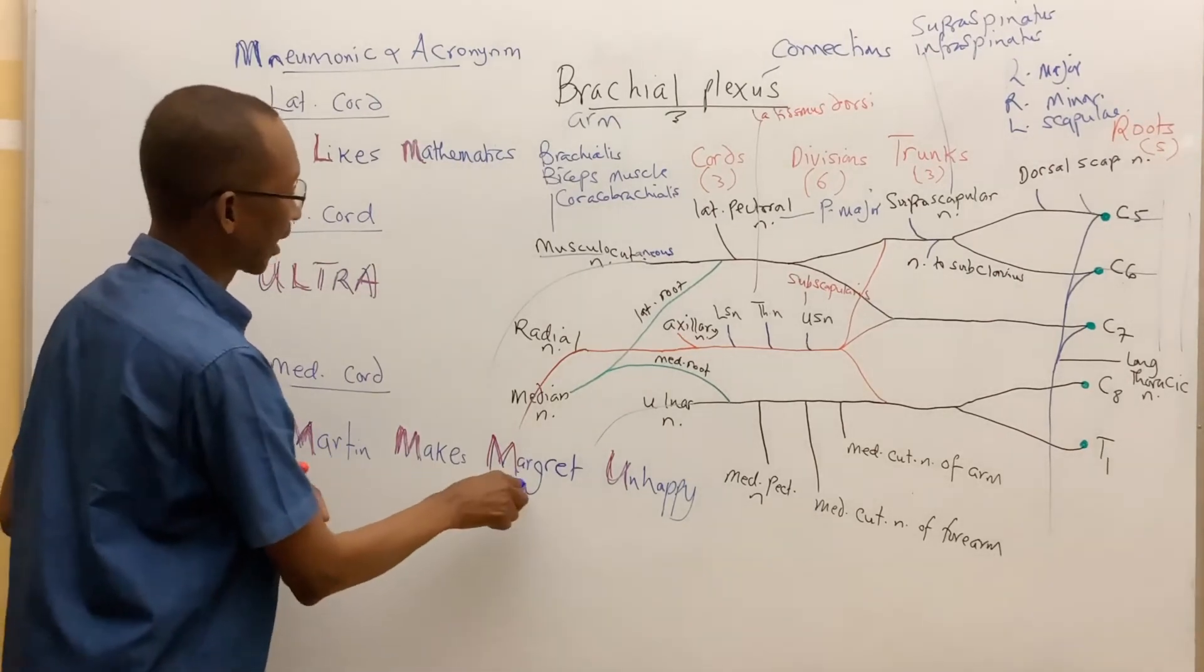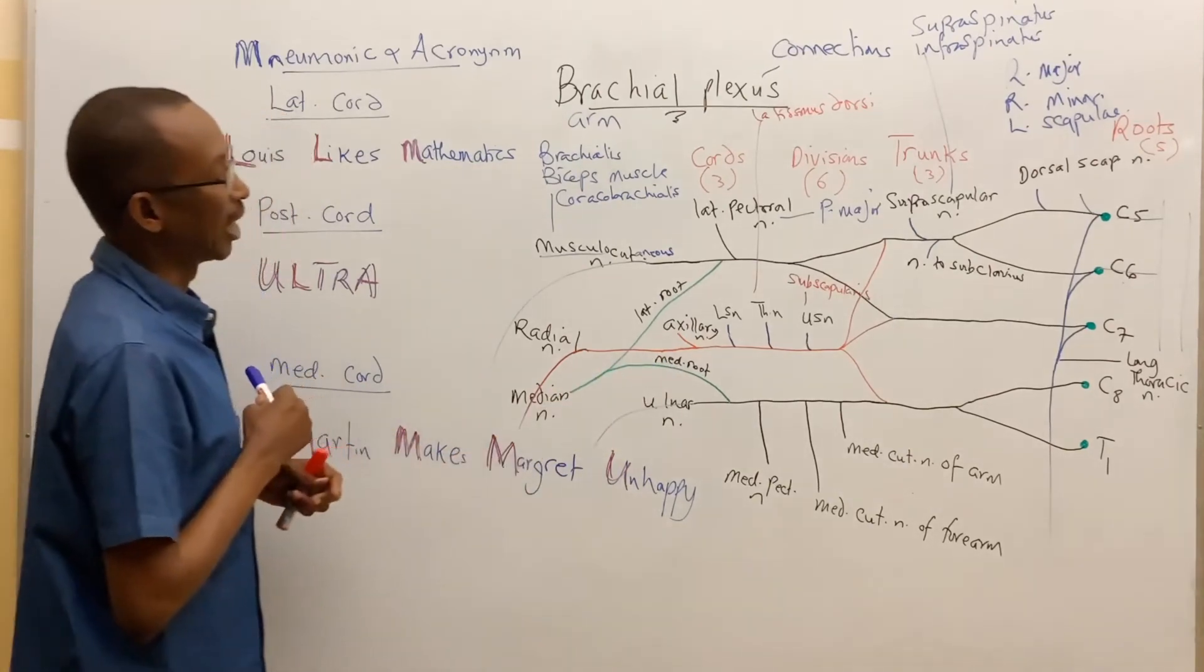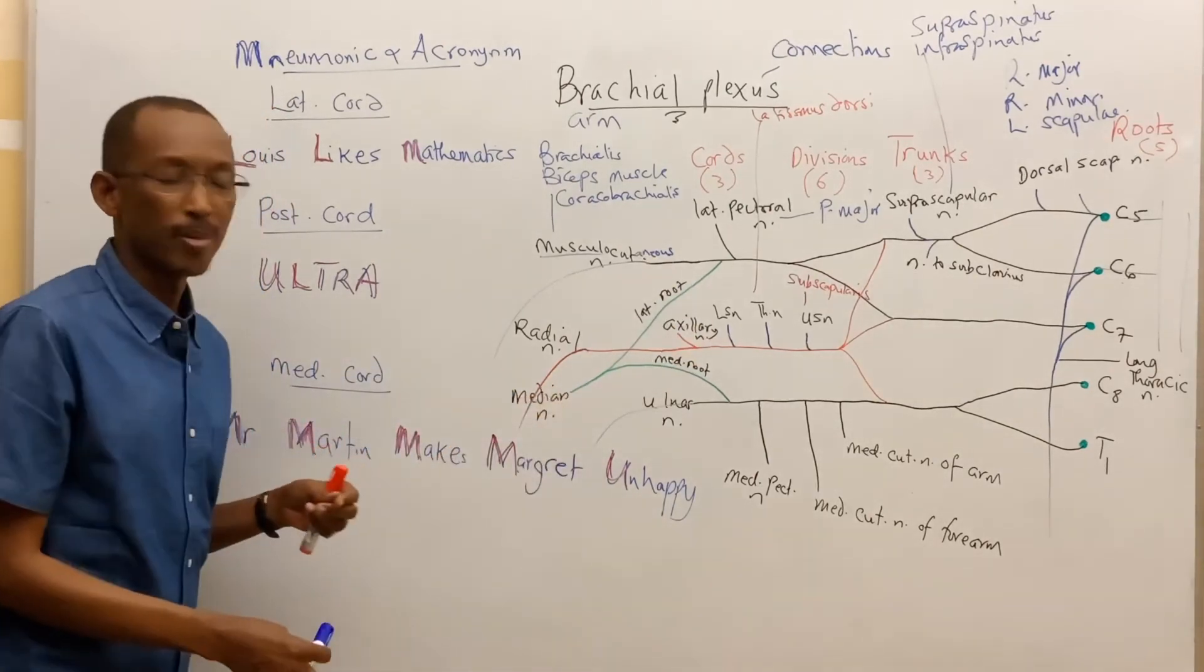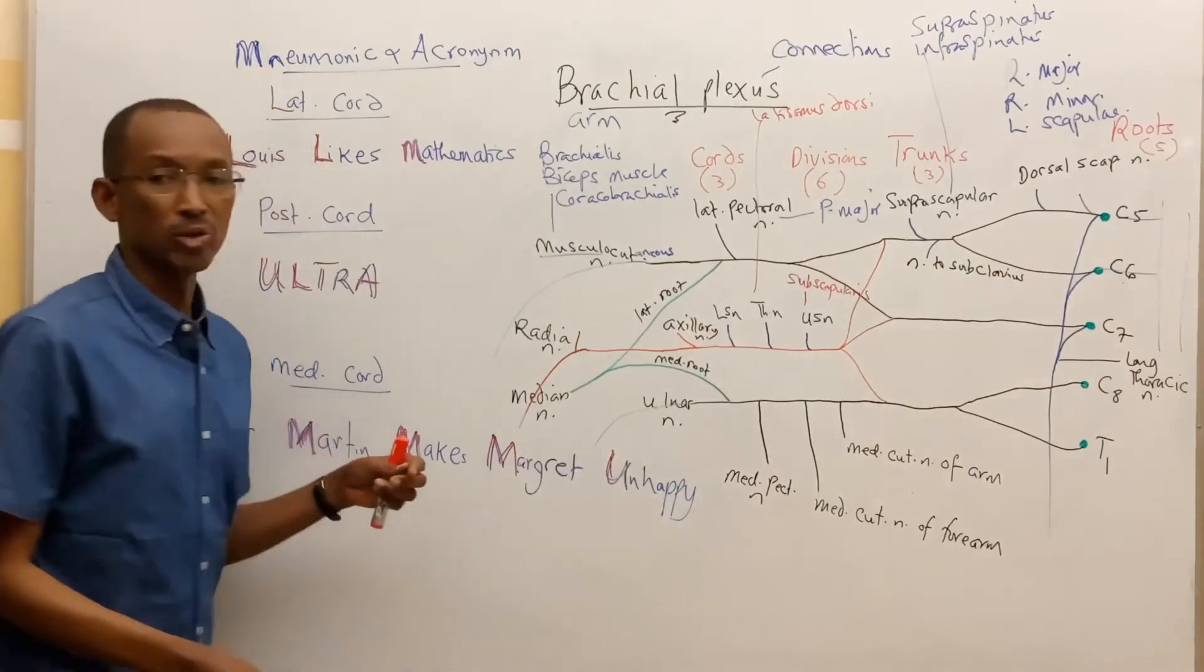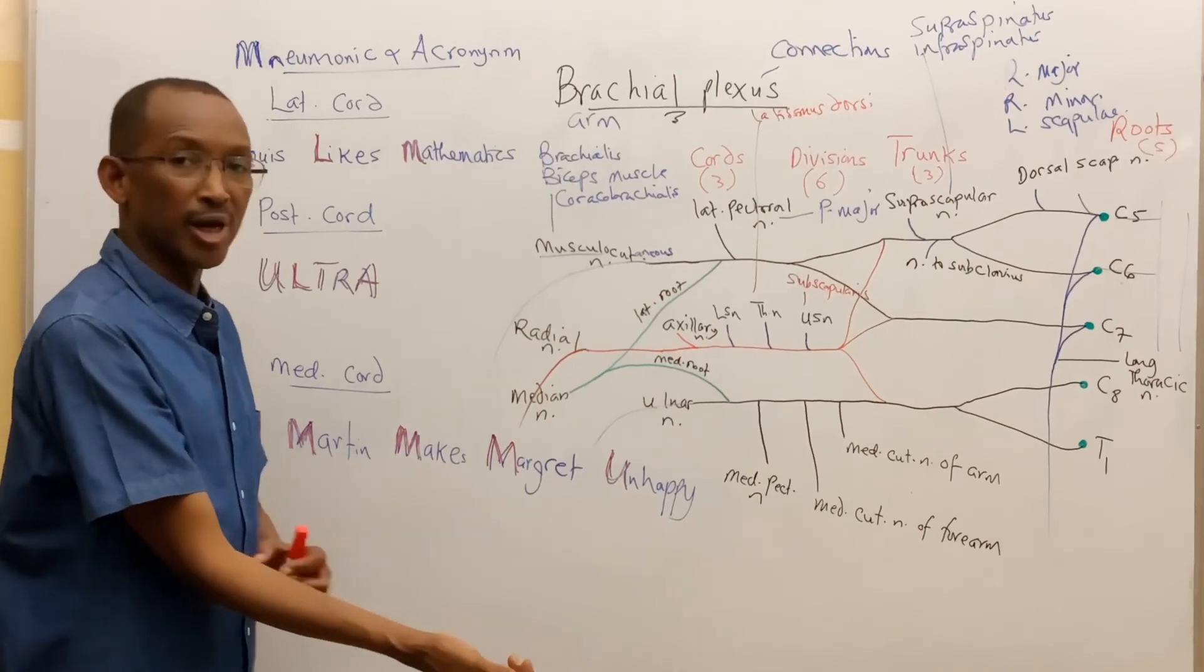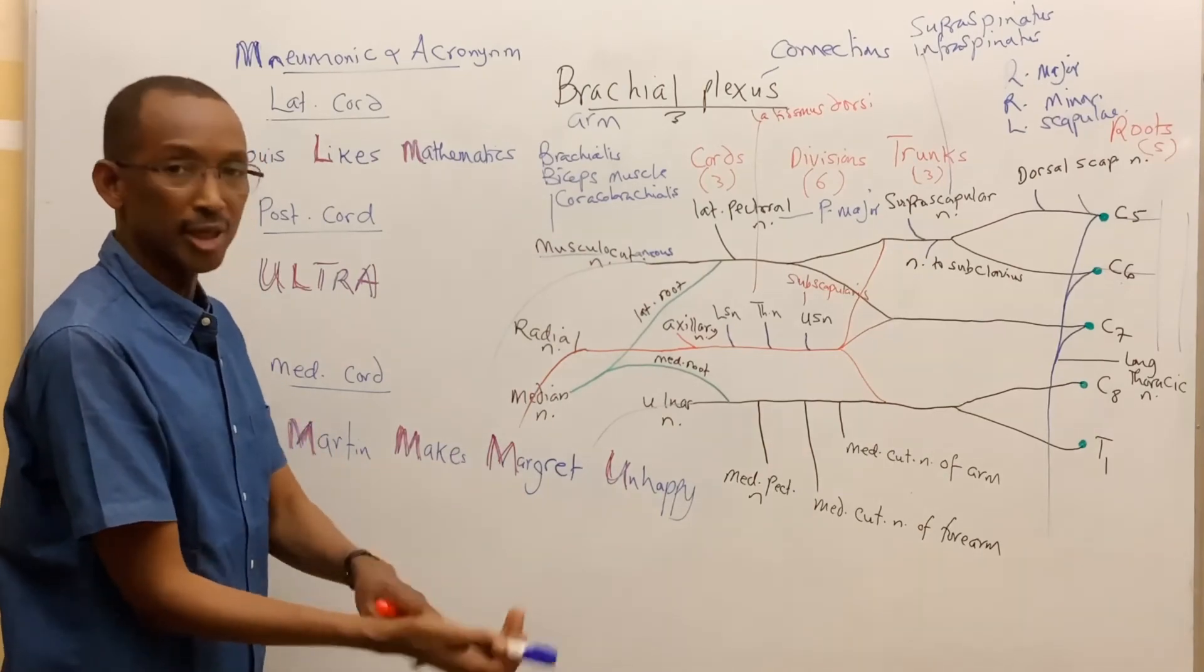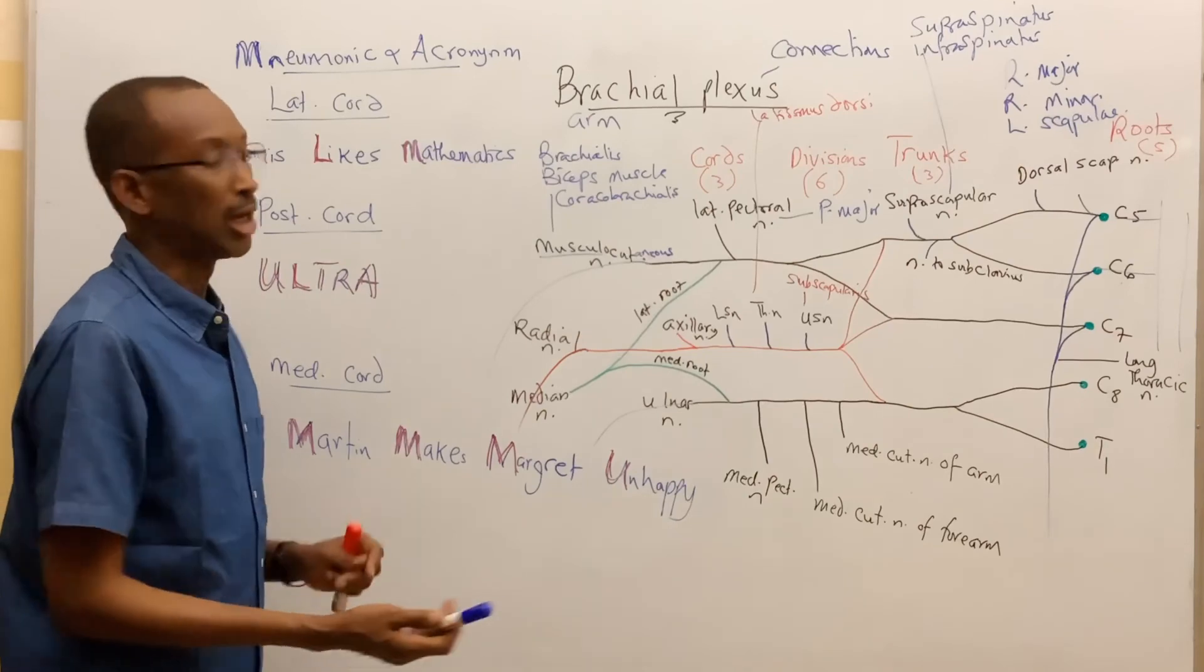And the Margaret, M for the medial root of the median nerve, which I said joins with the lateral root of the median nerve to form the median nerve. And then lastly, the unhappy, U for the ulnar nerve, which I made mention supplies the flexor carpi ulnaris muscle, the medial half of the flexor digitorum profundus, the dorsal and palmar interossei muscles of the hand, as well as the medial two lumbricals of the hand.